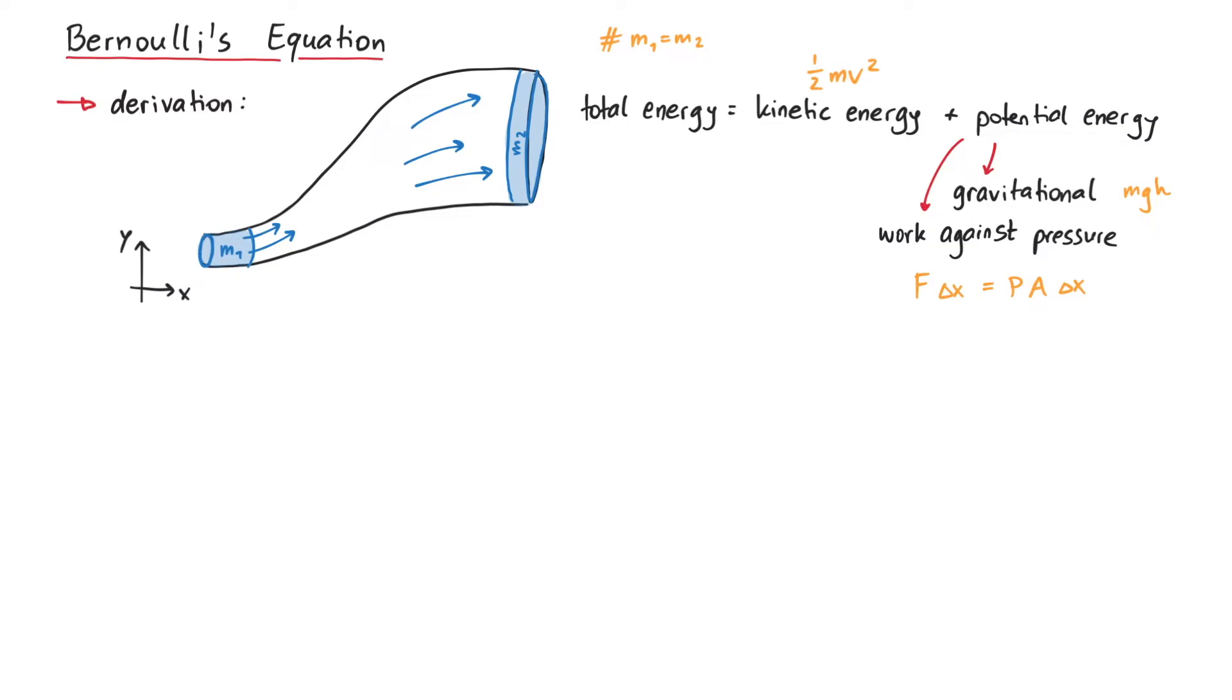So what is the total energy of the fluid volume on the left? We have kinetic energy, where we can write the mass as density times volume, gravitational potential energy, and the work we discussed earlier. And due to energy conservation, this must equal the energy of the second volume. If we write out everything, the equation looks like this.